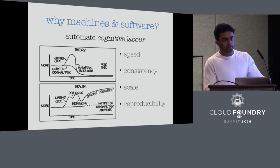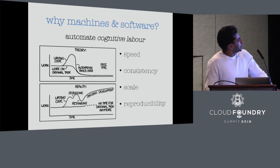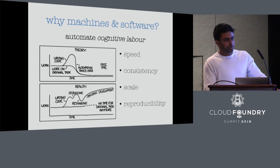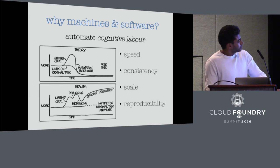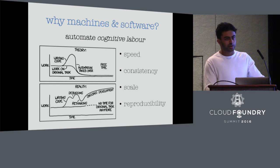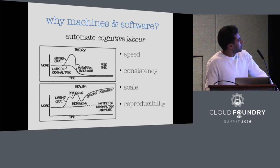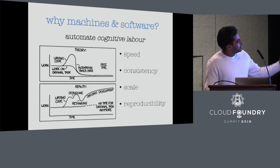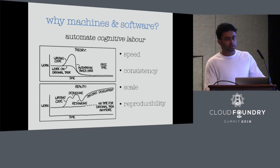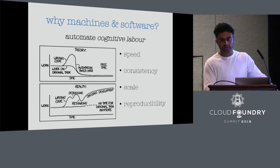I like this term that Martin Ford used in his CF keynote: cognitive labor. I think it describes a lot of what we're trying to solve for when we build software. We try to solve for the same sorts of problems: speed, consistency, scale, and reproducibility.